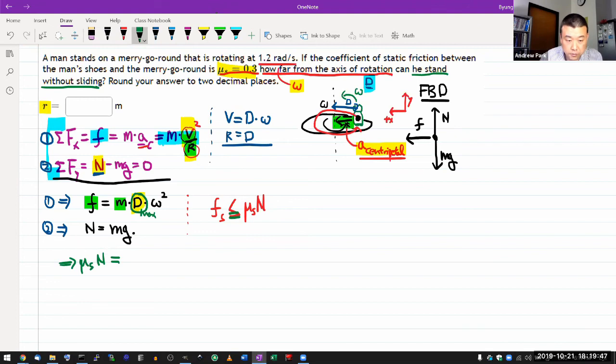Now I plug in what N is. N equals mg. So masses cancel out. That's fortunate because I don't know the mass. And now I can solve for d max. Solving for d max, I get d max equals mu s g over omega squared.